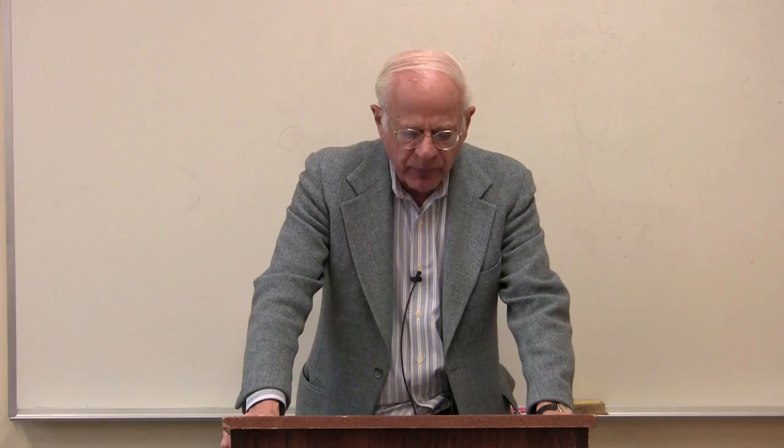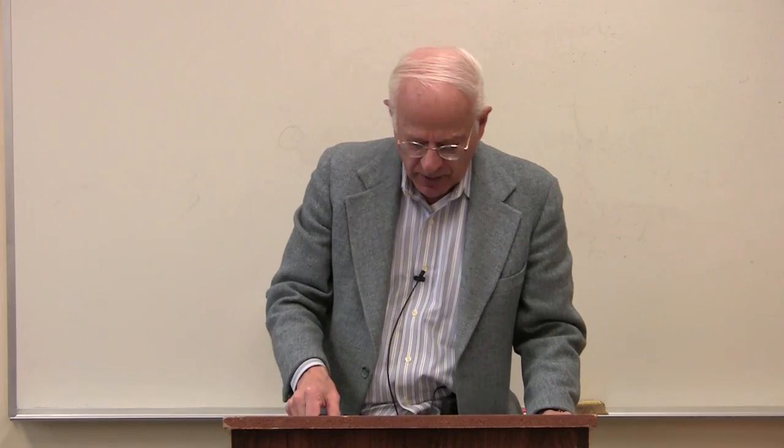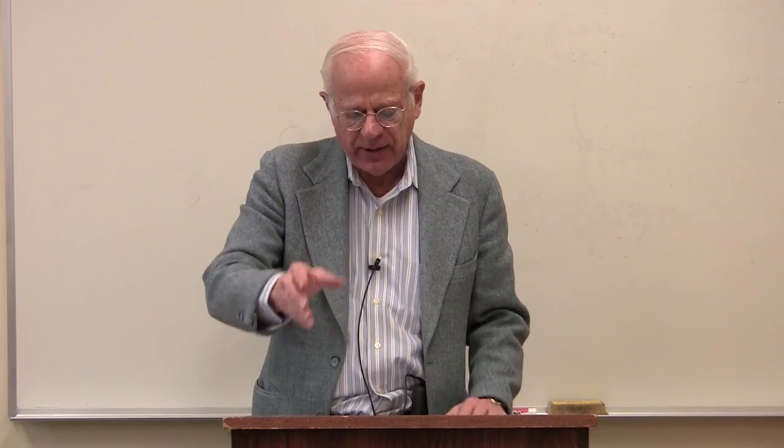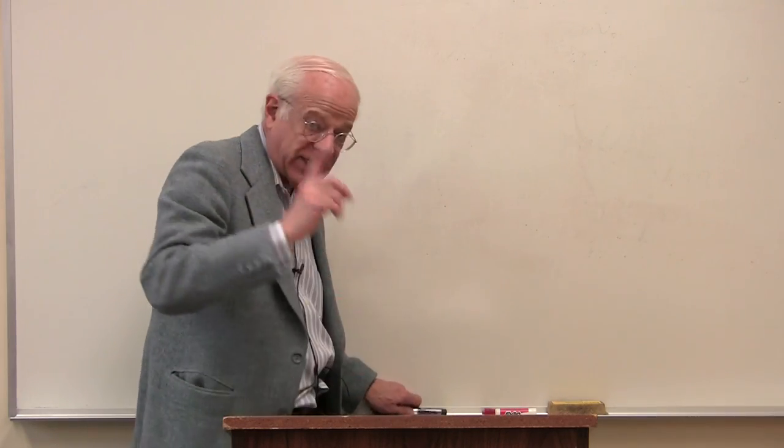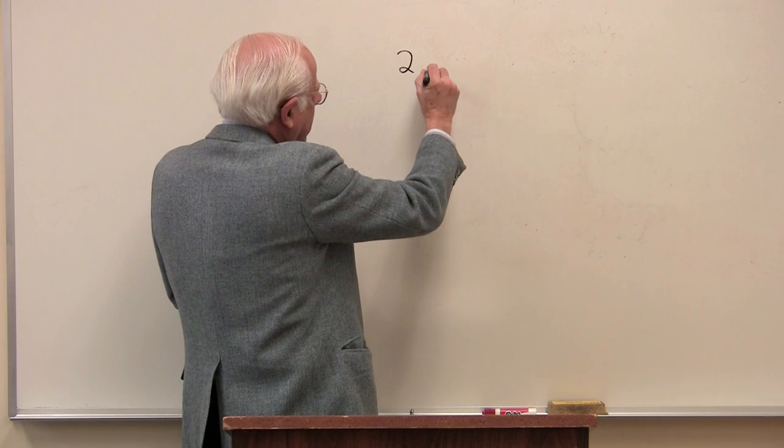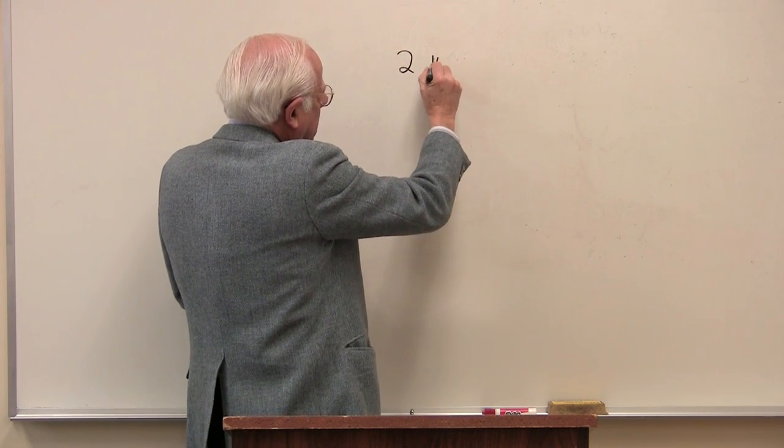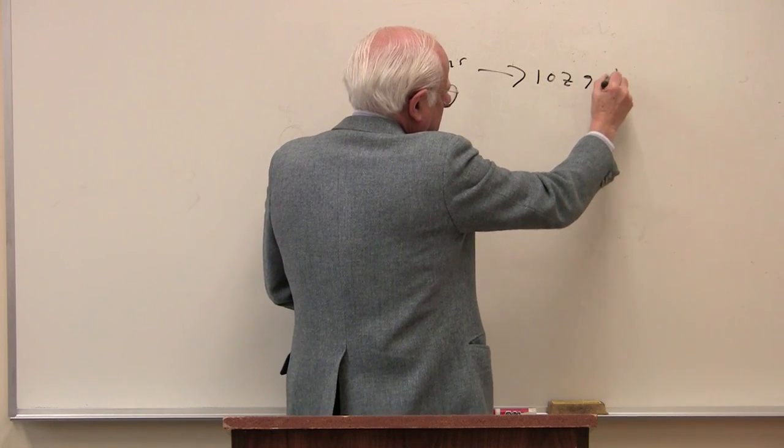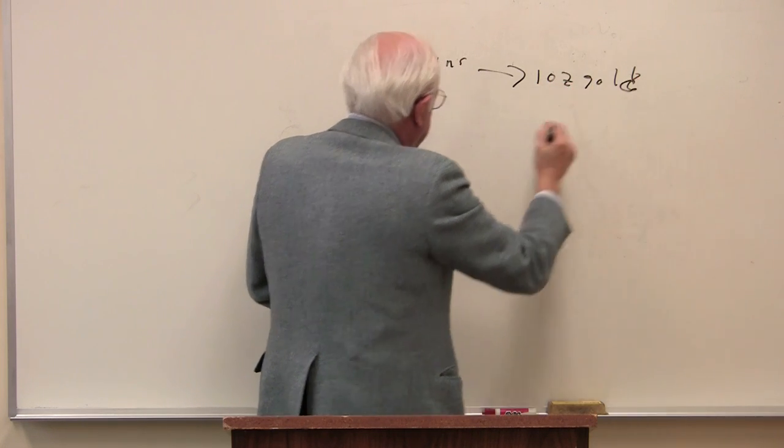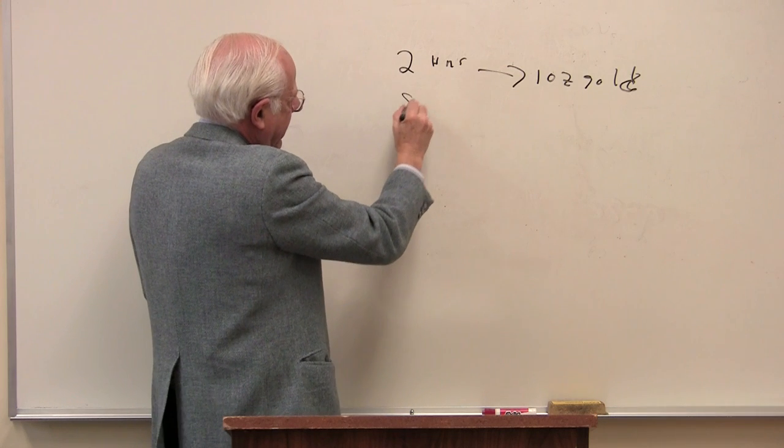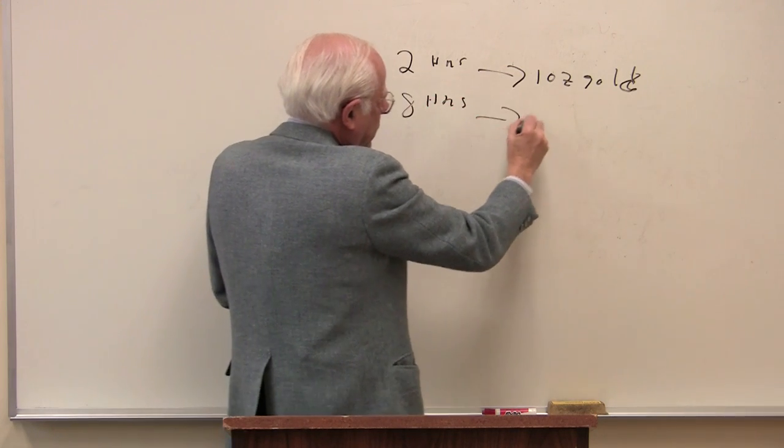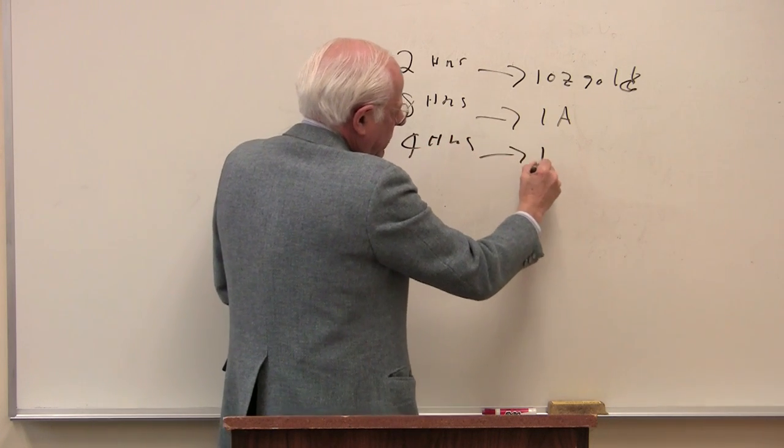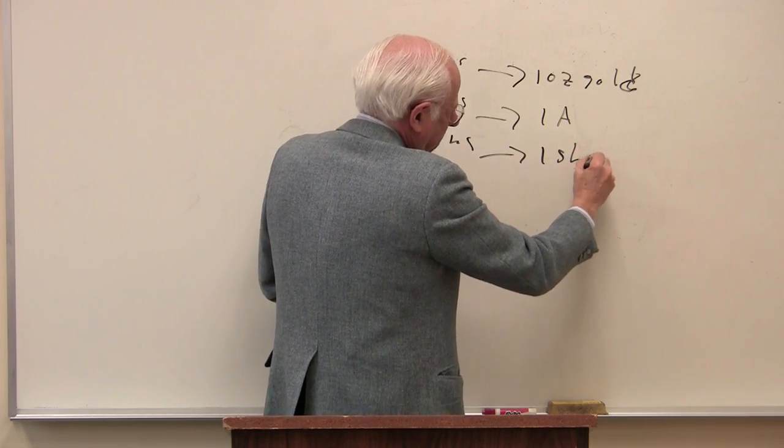Suppose it takes two hours to produce an ounce of gold. So then we have, by the Marxian abstract labor theory of value, to use the same numbers that we've used before, it takes two hours to produce one ounce of gold. And now let me put everything else on the blackboard. It took eight hours to produce one apple and it took four hours to produce one shirt, if I remember correctly.